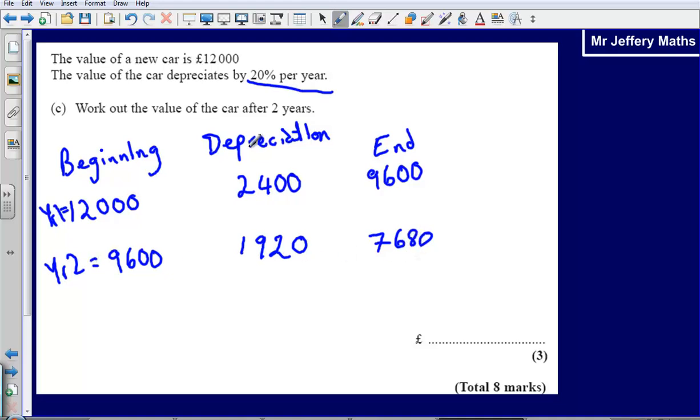So at the end of year 2, after 2 years, the amount is going to be £7,680. And that would be our final answer. Thank you.